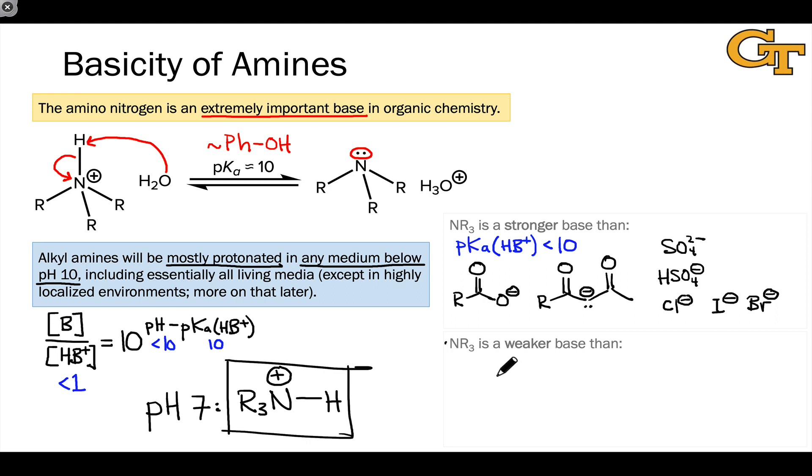And so it's a weaker base than many anionic bases. Naturally, it's going to be a weaker base than, for example, NR2 minus, an amide base, but it's also weaker than anionic alkoxides, OR minus, and any sort of unstabilized carbon base, CR3 minus.